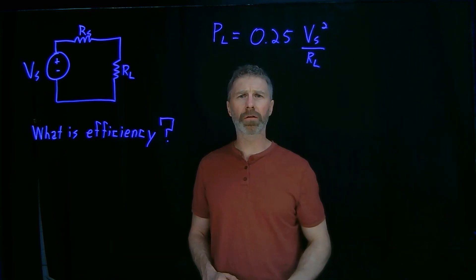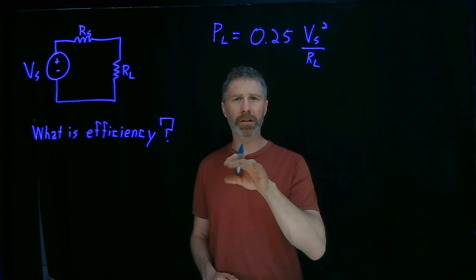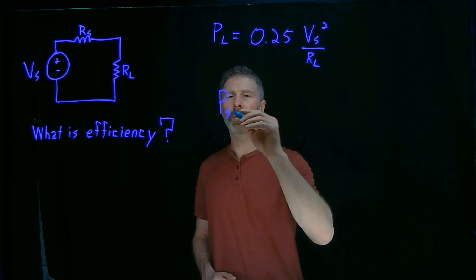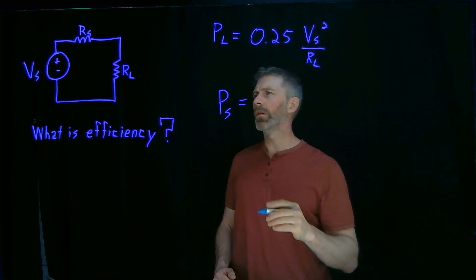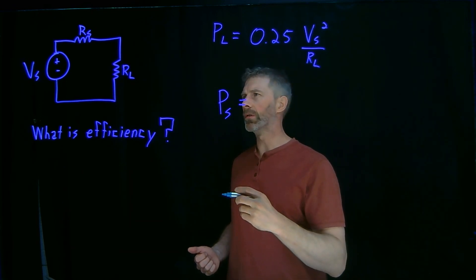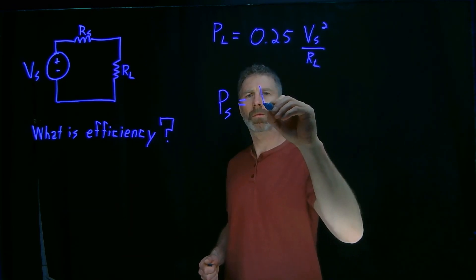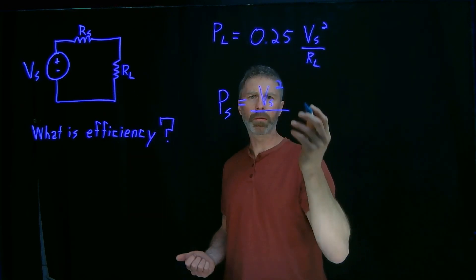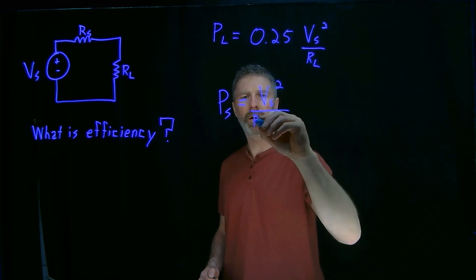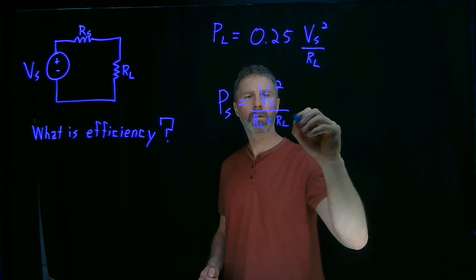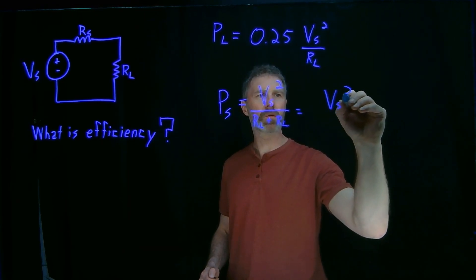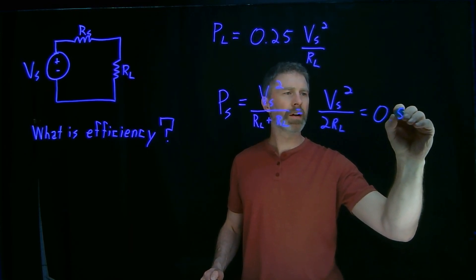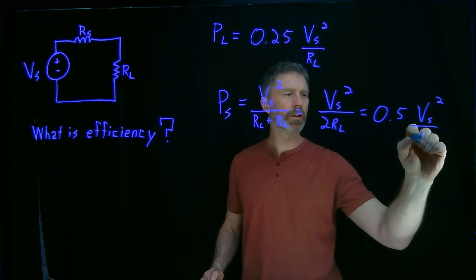And we have an equation now for the power to the load. That's how much power is being output from the system. But what about the power that's being delivered by the system, the power that's being output by the source? Well, that's a pretty simple equation to deal with. It's the voltage from the source squared divided by the total resistance of the circuit. And remember, we're at the maximum power point, so RL and RS are equal. So that's going to simply be VS squared over 2RL or 0.5 VS squared over RL.